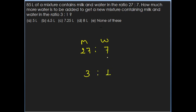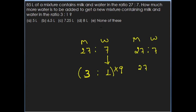When you add only water to this mixture, the quantity of milk remains the same. In the initial ratio milk is 27 units and in the final ratio milk is 3 units. To make these equal, multiply the final ratio by 9. Only then the milk quantity becomes equal. So the initial ratio is 27 is to 7 and the final ratio becomes 27 is to 9.